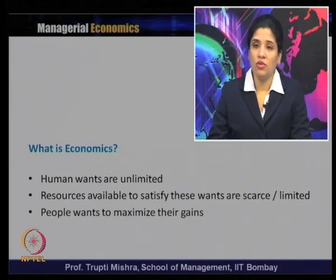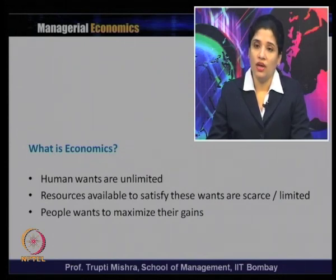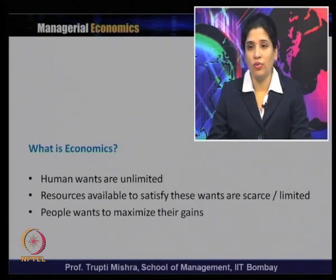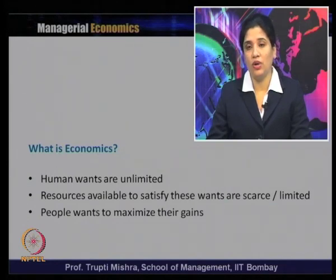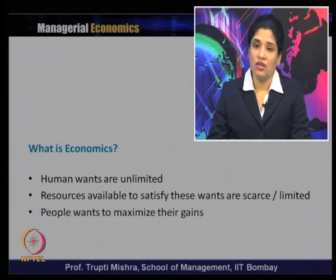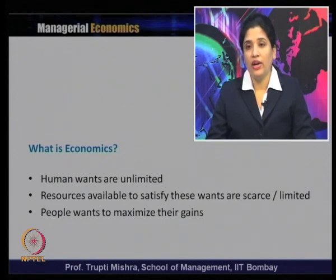Wants are unlimited: individuals, groups, or the economy as a whole never get fully satisfied. When we are in the lower income group, we aspire to reach the middle income group. When in the middle income group, we aspire to reach the high income group. Similarly, at the economy level, if GDP growth is 5%, they aspire to 7%; if it is 7%, they aspire to 10%. Any individual or economy always increases their wants. But the other side is that while human wants are unlimited, the resources to satisfy those wants are scarce and limited.